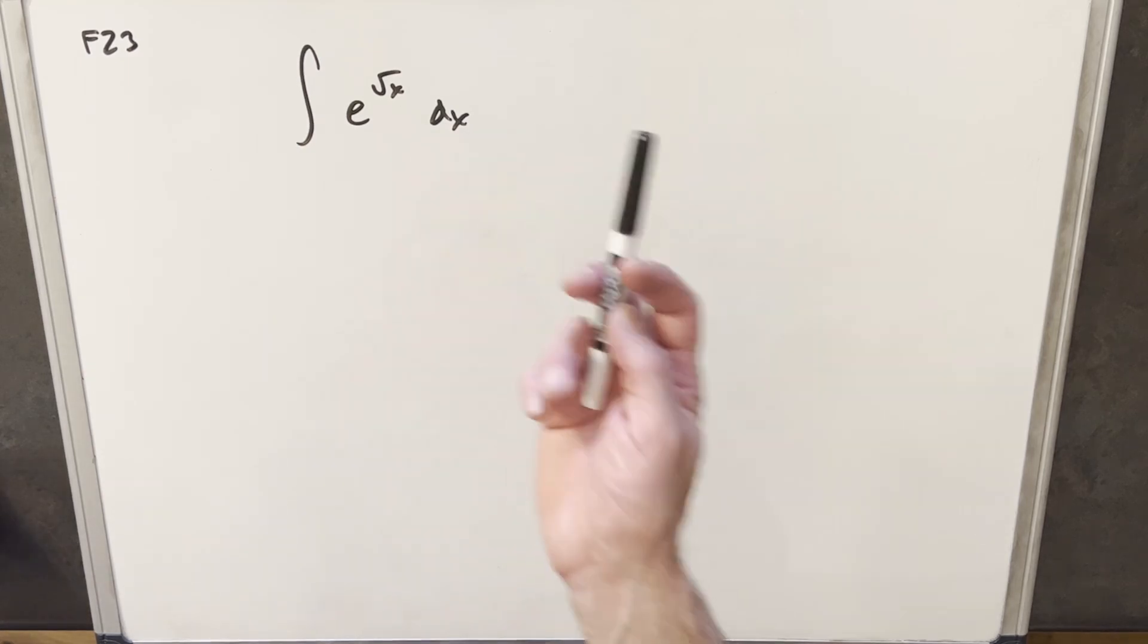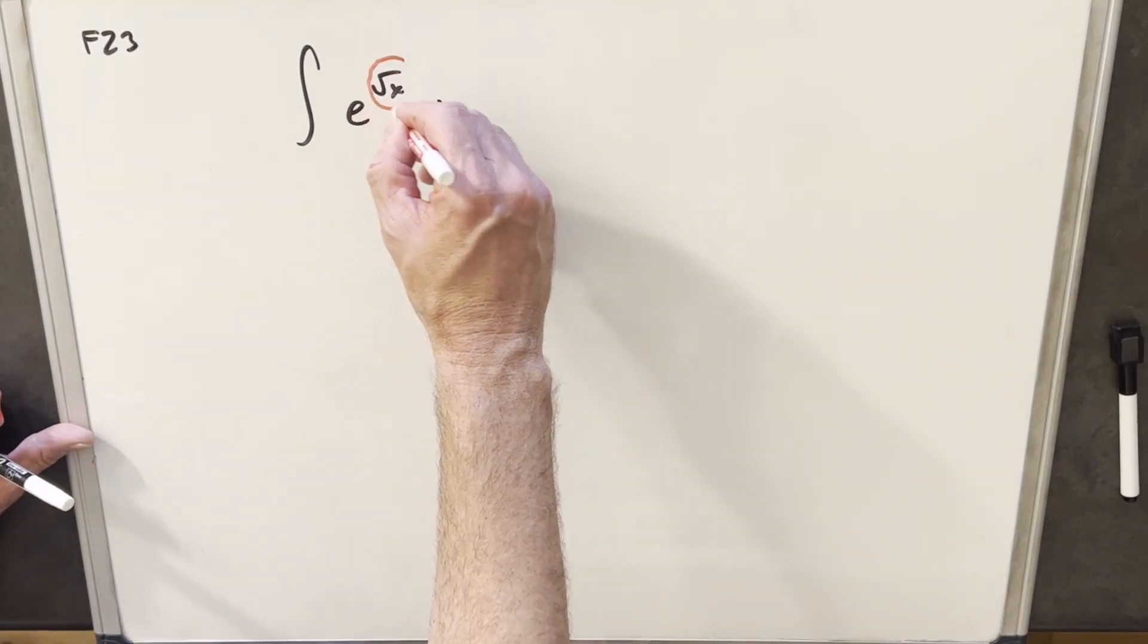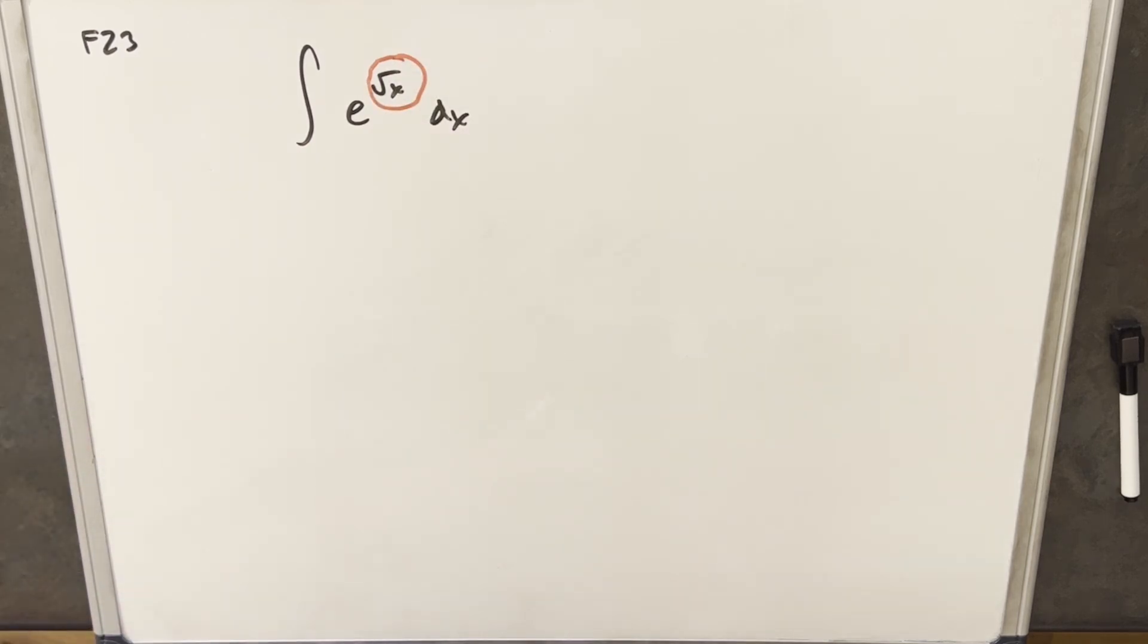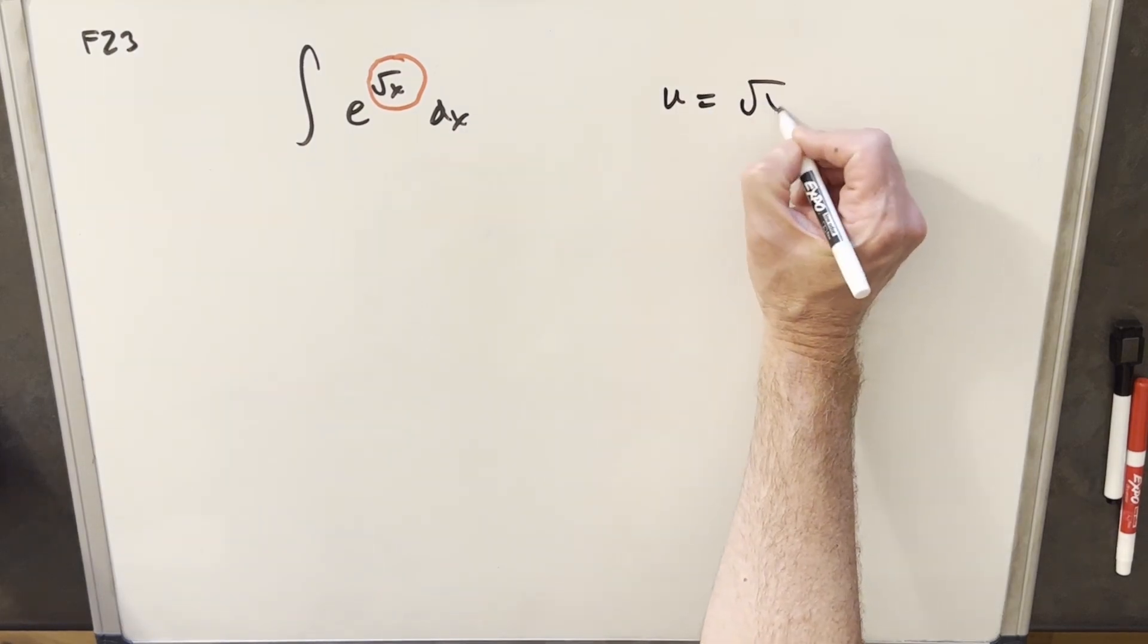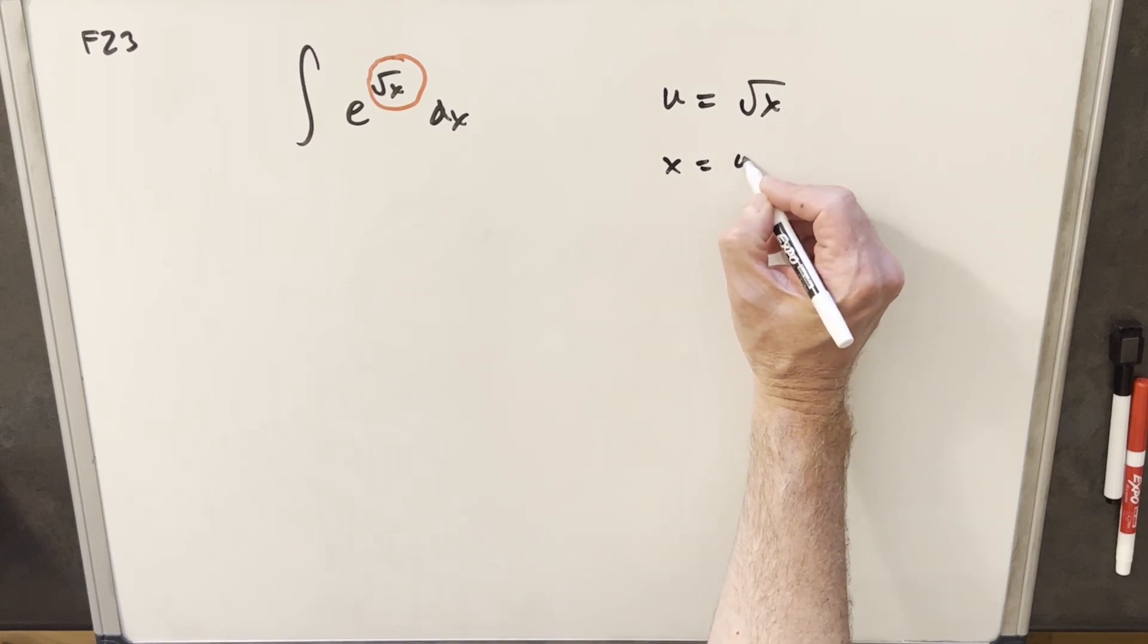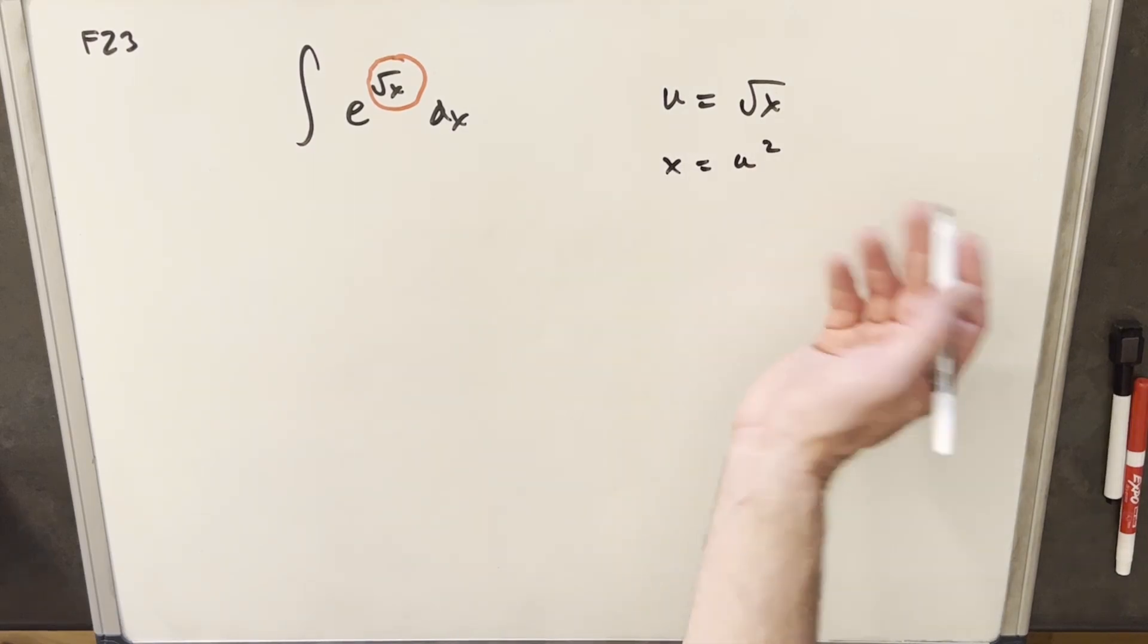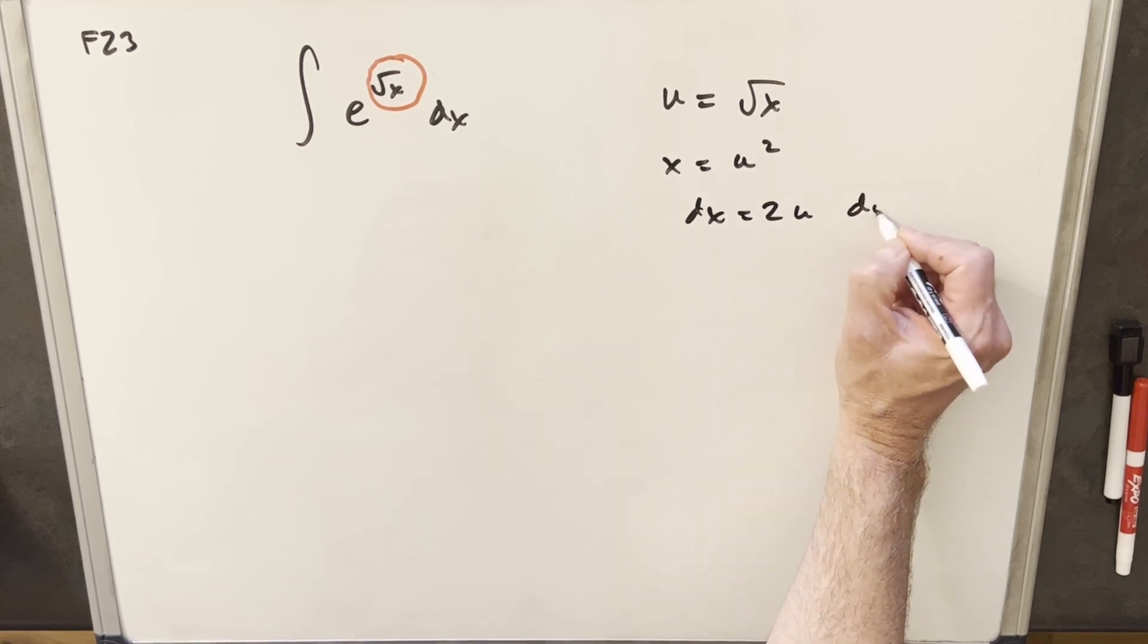We know that if we have the integral of e to the x, that's very simple. So what I'm going to do is make a u substitution for this square root of x, just thinking that if I get this into the form of e to the u, it's going to be really easy. So I'm going to call u equal square root of x. Then we can just solve for x and call this, so x is going to be u squared. Take a derivative, dx is going to be 2u du.